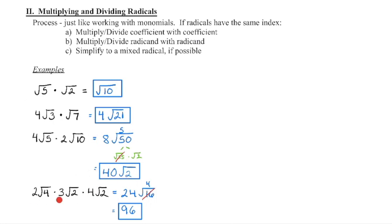2 times 3 is 6, times 4 is 24. 4 times 2 is 8, and 8 times 2 is 16. Since 16 is a perfect square, we take the square root of 16 to get 4, and 4 times 24 gives us 96. There is no more radical — we have a whole number as the final result.